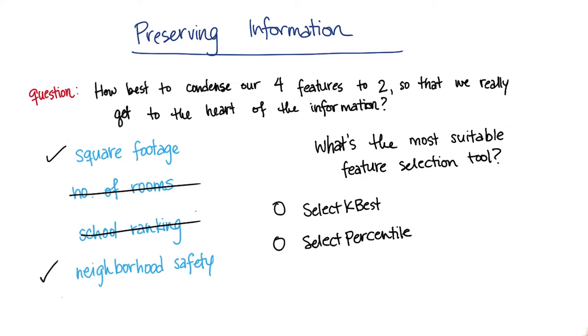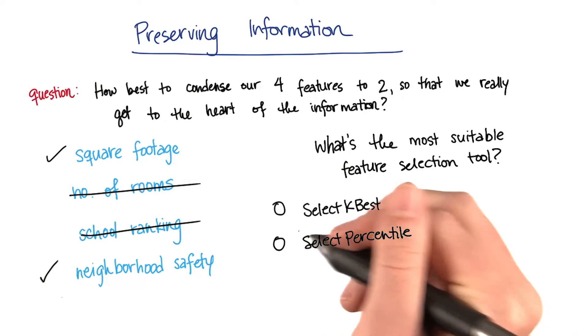So here's a little practice quiz. Which of the feature selection tools do you think would be most suitable for this? These are two examples that are both available in sklearn.